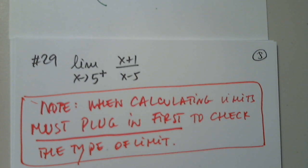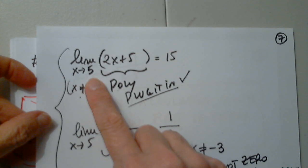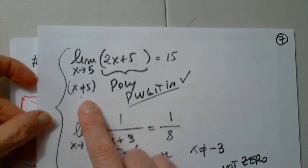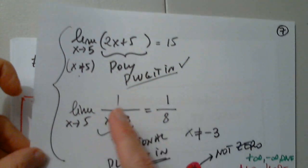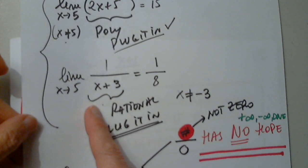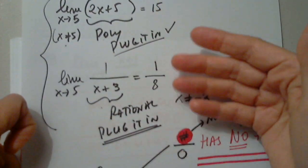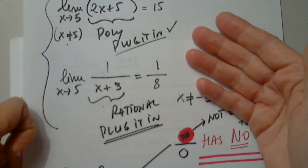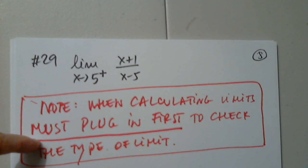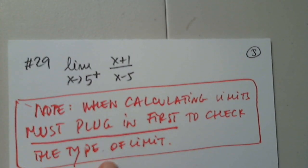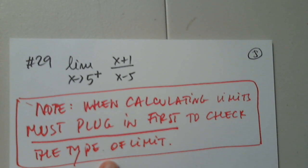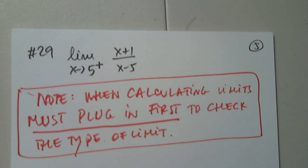Wait a minute — you told us x approaches 5, x not equal 5. You still plug it in. x approaches 5, not 5 — you still plug it in. Yes, because it happens to be the same. We always have to plug it in. What do you mean by the type of limit?